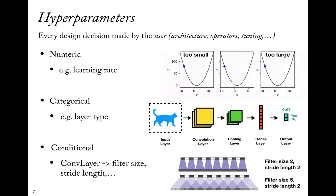Next to numerical hyperparameters, we also have categorical ones — for instance, the type of layers: convolutional layers, pooling layers, dense layers, regularization layers. And some are even conditional: if we choose a convolutional layer, we also have to choose the filter sizes and stride lengths, which have a huge effect on what the model will learn. We need to deal with all these different types of hyperparameters.